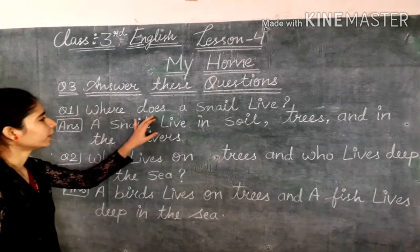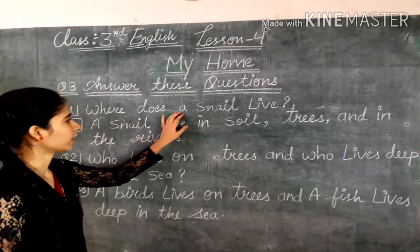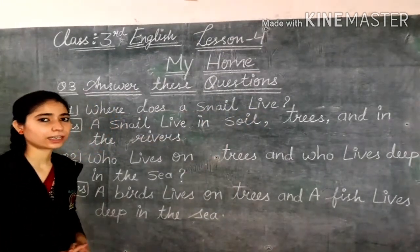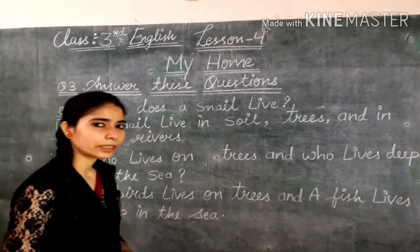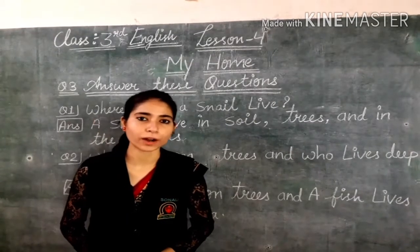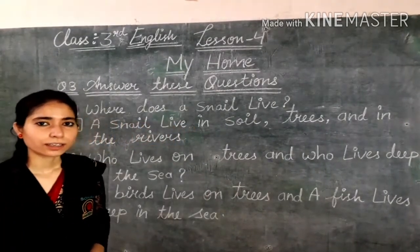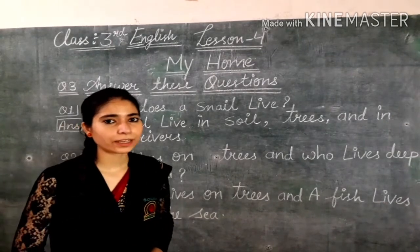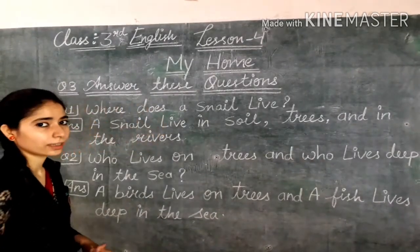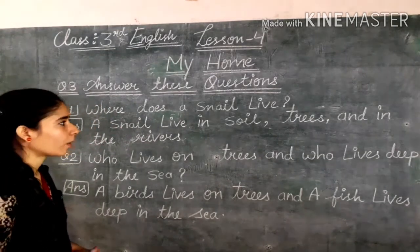First question: Where does a snake live? We have explained the snake — it is a small animal with a coiled shade on its back. This is a small animal which has a coiled shade, so the snake is quite unique.